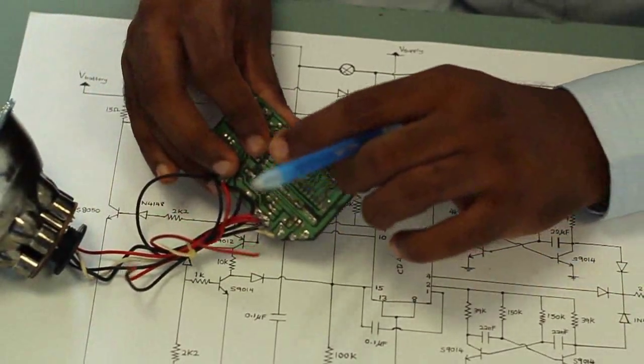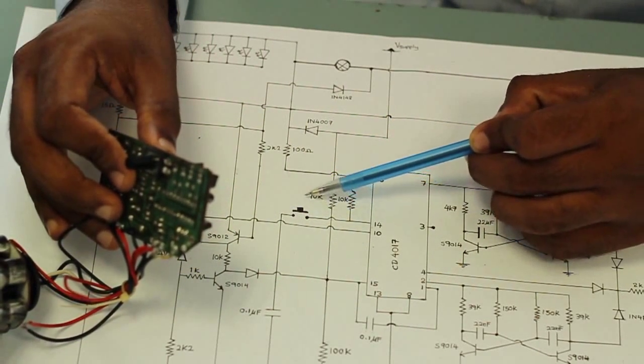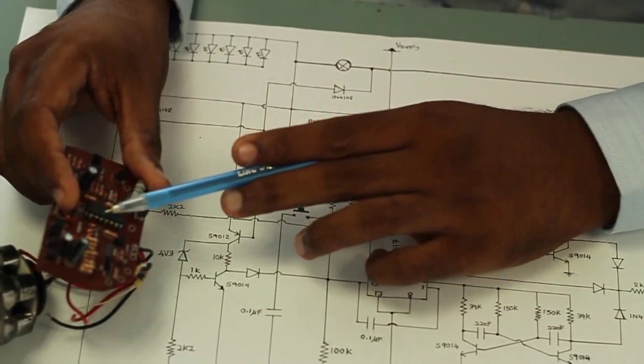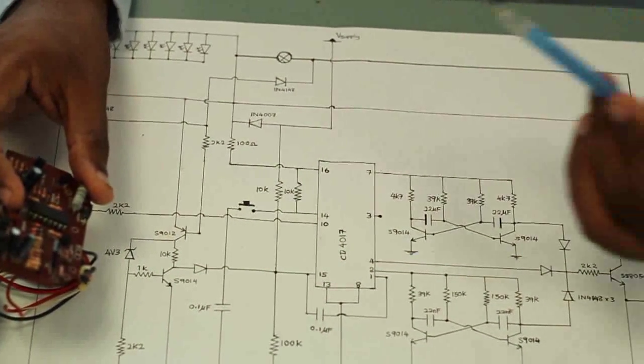This push button is situated here, which will give the IC clock pulses. The IC is CD4017. This IC is a decade counter, so it counts from 0 to 9.